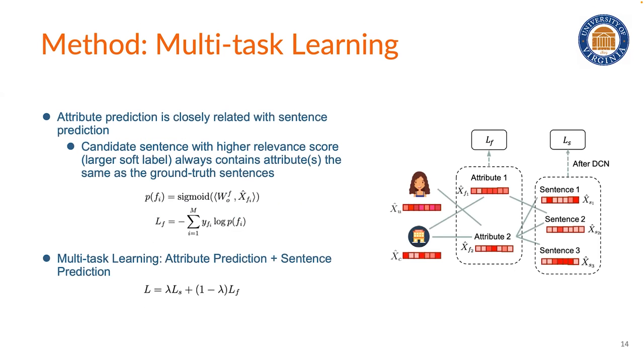Also, attribute prediction is closely related with sentence prediction. This is because the candidate sentence with higher relevance score always contains attributes that also appear in the ground-truth sentence. So therefore, in order to select sentences that can cover target attributes, we also have this multi-task learning to combine the attribute prediction with sentence prediction. And for attribute prediction, we apply binary cross entropy loss.